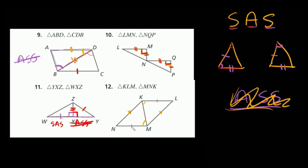What else do we know? It gives us one side that's congruent — this side is congruent to this side. And this shared side is congruent to itself. So we have side angle side on this triangle, and side angle side on this triangle as well. Both triangles have side angle side, so we can definitely say they are congruent using side angle side.